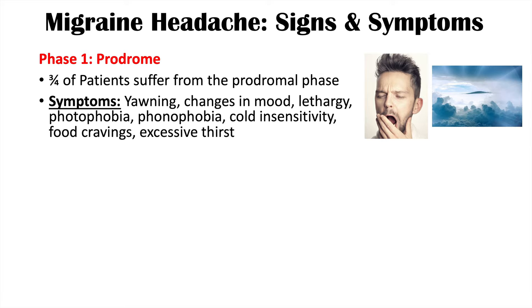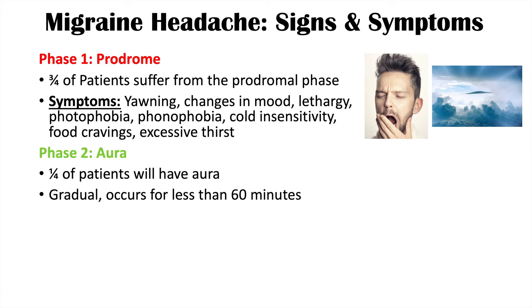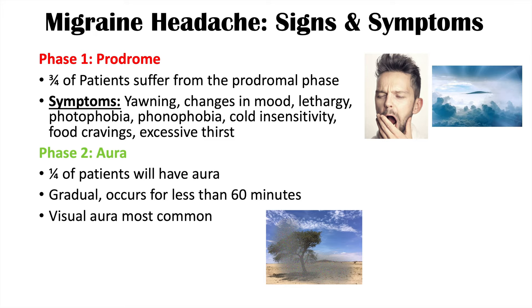After the prodrome, the patient may experience phase two, the aura. Only a quarter of patients will have aura — a minority. If a patient does experience an aura, it is gradual and lasts less than 60 minutes. Visual aura is most common. One visual aura symptom is a scintillating scotoma — a spot that flickers, shines, and blocks vision in a particular area of the visual field.